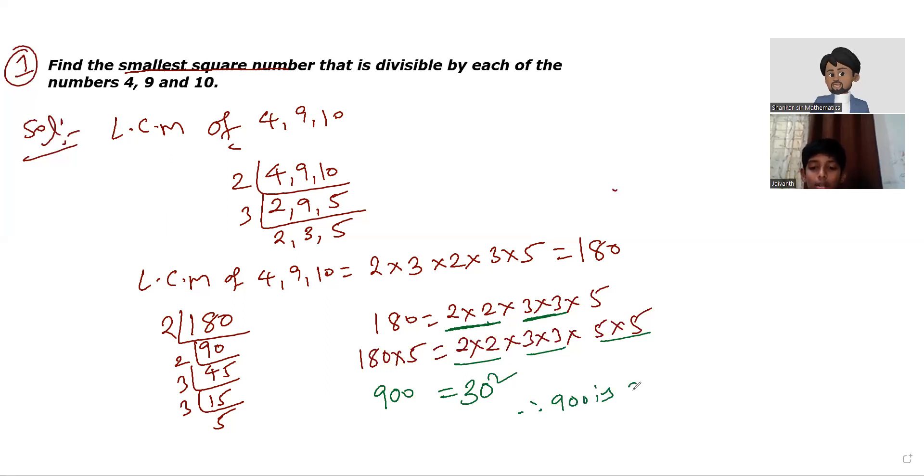It is divisible by 4, 9, and 10. And I'm giving a final conclusion: it is divisible by 4, 9, 10. Okay, but exactly divisible. See, it is divisible by 4 exactly, it is divisible by 9 exactly, it is divisible by 10 also exactly.